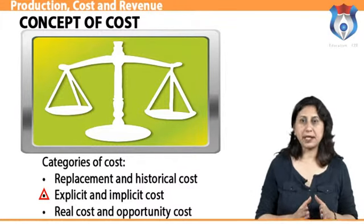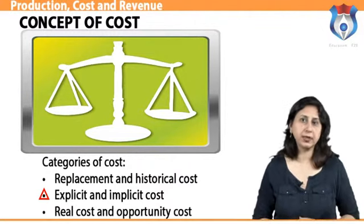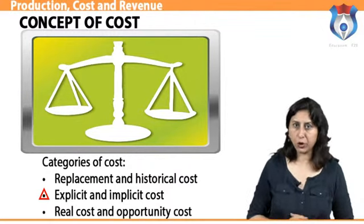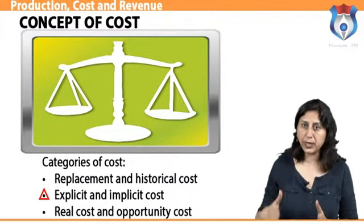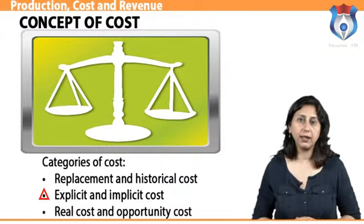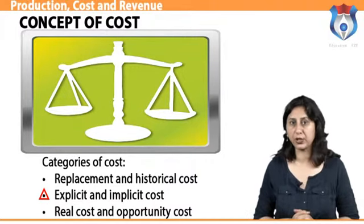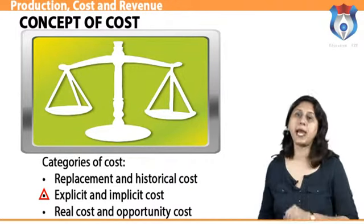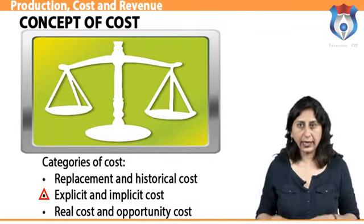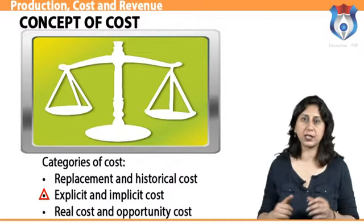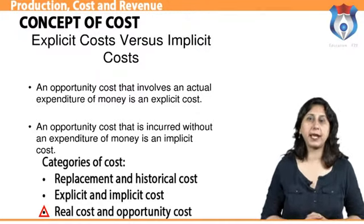Explicit cost is a business expense that can be easily identified, such as wages, rent and materials. Explicit costs give clear and evident cash outflows from a business that decrease its profitability. Implicit costs are the imputed cost of using factors of production that a firm owns — for example, if an owner uses his own property as a factory building, then the rent of that building is an implicit cost.